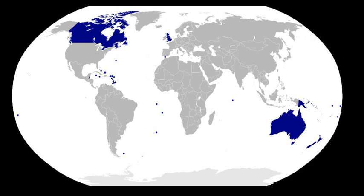There are 16 Commonwealth realms currently with a combined area, excluding Antarctic claims, of 18.7 million square kilometres and a population of 144 million, of which all but about two million live in the six most populous: the United Kingdom, Canada, Australia, Papua New Guinea, New Zealand, and Jamaica.